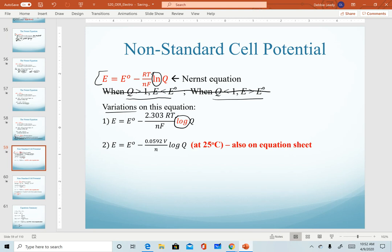If you notice on your equation sheet, this one is not listed. I simply post it here because if you're using outside resources, you might come across it. So realize that these are perfectly equivalent equations. The next equation or variation that we have is number two that's listed here. This one is on your equation sheet. So this one is actually derived from number one, but it is specific for 25 degrees Celsius.